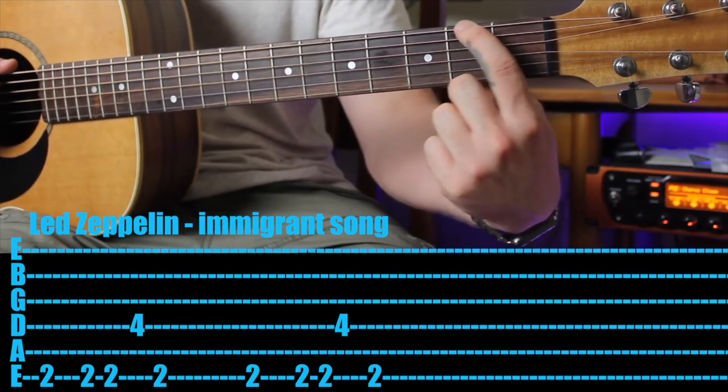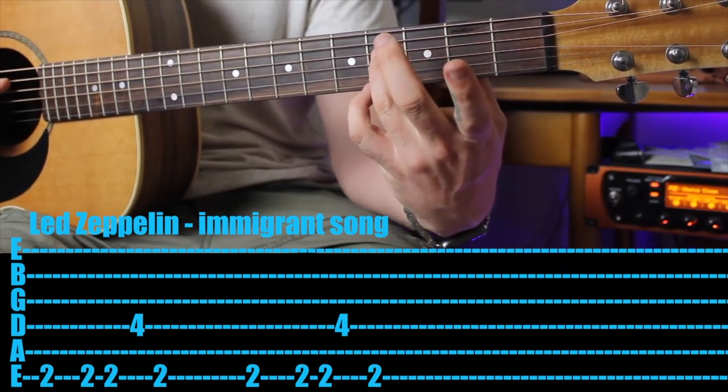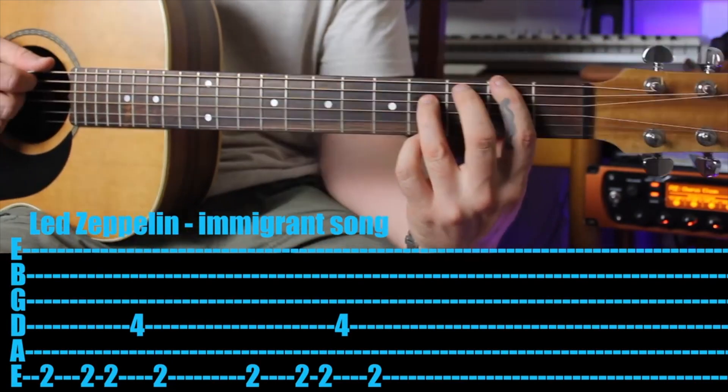So your first finger handles all the notes in the sixth string and your third finger just gets that one note fourth fret on the fourth string. That's it.